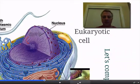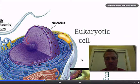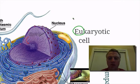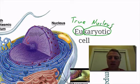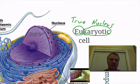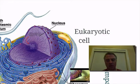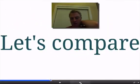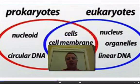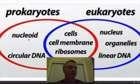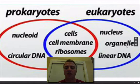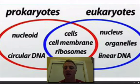The other type of cell is called a eukaryotic cell. If you break the word down, 'eu' actually means 'true,' and 'karyotic' means 'nucleus' — so that's 'true nucleus.' If you notice in this picture, they have a nucleus, quite visible in the cell. Comparing the two: prokaryotic cells have a nucleoid region, not a true nucleus, while eukaryotic cells have a nucleus. Eukaryotic cells have all the organelles; prokaryotic cells do not. Prokaryotes have circular DNA, whereas eukaryotes have linear DNA.